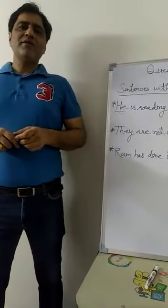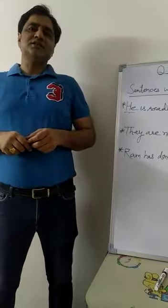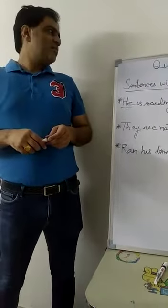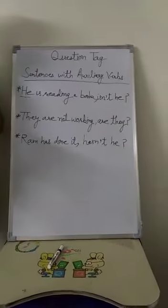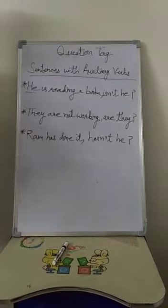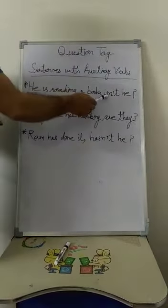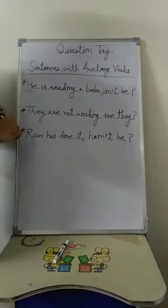Good morning students, you have read about interrogative sentences. Today we will read about question tags. What is a question tag? A question tag is a short phrase in which an auxiliary word is there and a pronoun is there, and in some cases 'not' is also used along with this auxiliary verb, but that is used in contracted form.